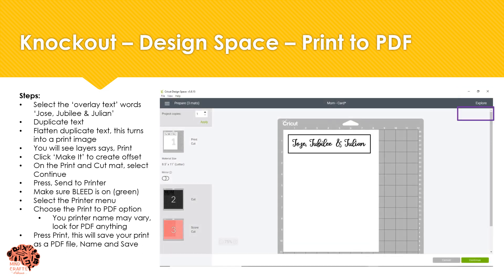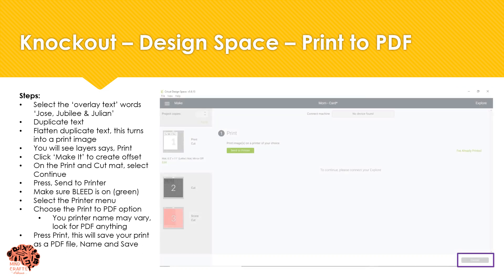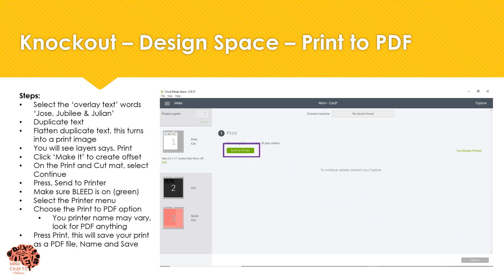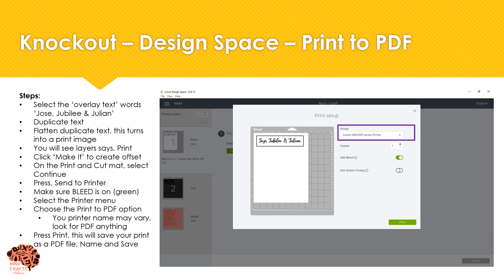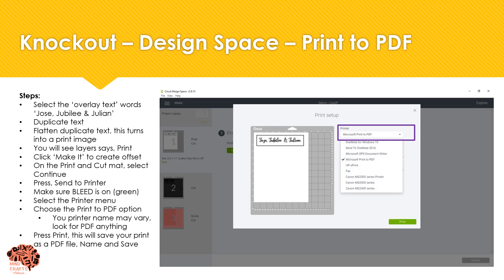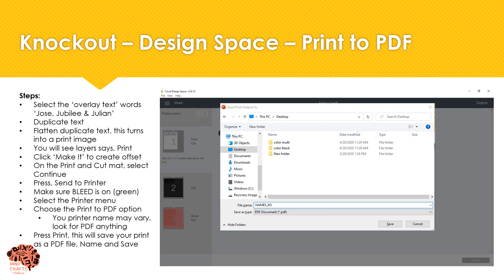Next we'll select "Make It" and then press continue so that we can print. Press "Send to Printer" and in your printer options you're going to select Microsoft Print to PDF. Yours may be a little bit different — you just want to find whatever feature you have that's for PDFs. Then select print. When you select print it's going to save your file as a PDF. Give your file a name and then select save.